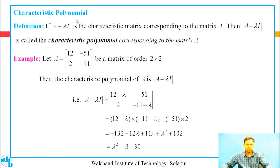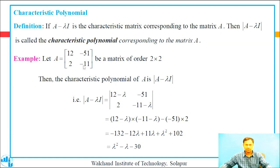Next definition: characteristic polynomial. If A minus lambda I is the characteristic matrix corresponding to matrix A, then the determinant of A minus lambda I is called the characteristic polynomial corresponding to matrix A. Example: let A equal first row [12, -51], second row [2, -11] be a matrix of order 2 by 2. Then the characteristic polynomial of A is det(A minus lambda I), where we subtract lambda from the diagonal elements: first row [12 minus lambda, -51], second row [2, -11 minus lambda].